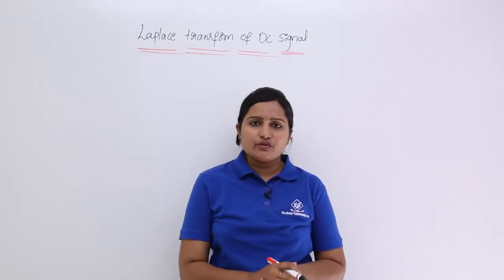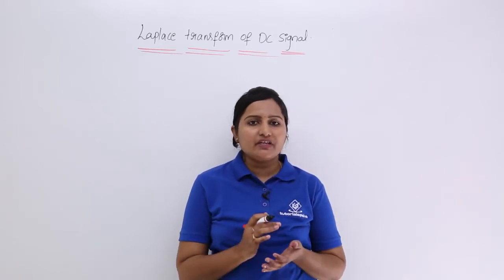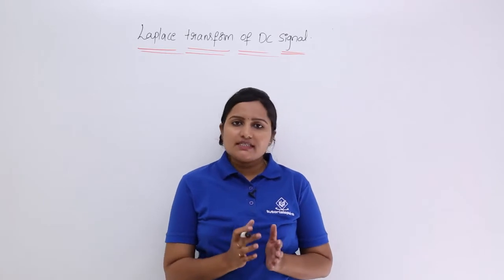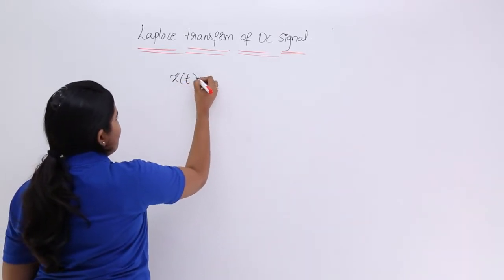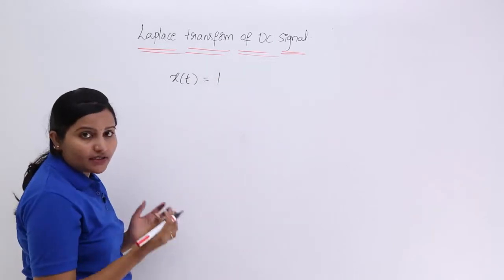In this video we are going to discuss Laplace transform of a DC signal. So DC signal means for example I am considering X of T is equivalent to 1. This is a DC signal.